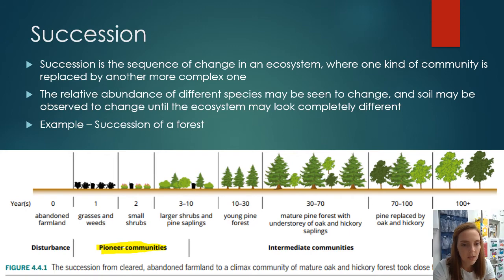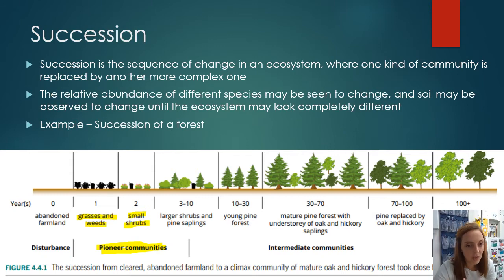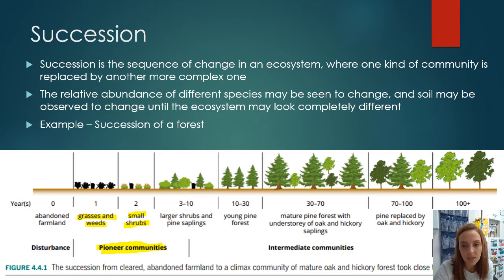Pioneer communities are the first to replace an ecosystem after a disturbance. Often these are species able to cope with very harsh environments — grasses and weeds appearing within a year and small shrubs, well suited to harsh dry environments with a lot of sunlight and poor soil quality. Over time we see intermediate communities with larger shrubs and pines, and eventually the ecosystem becomes really established and mature.